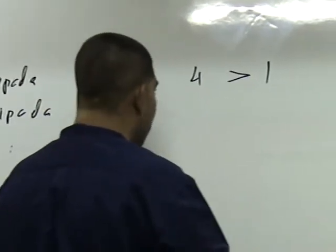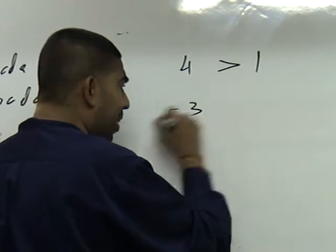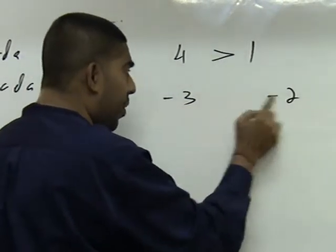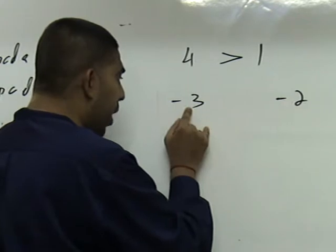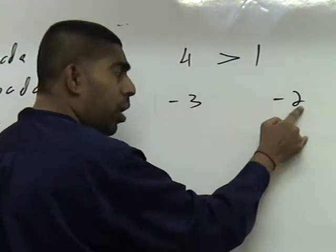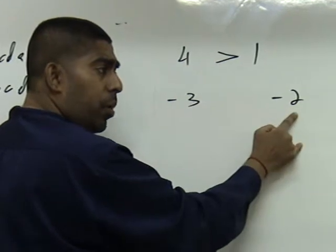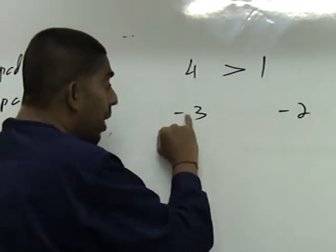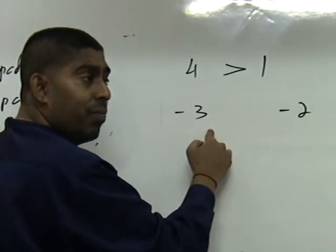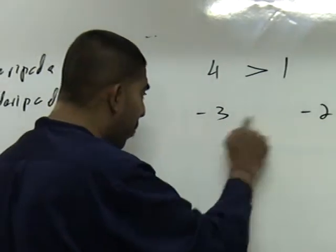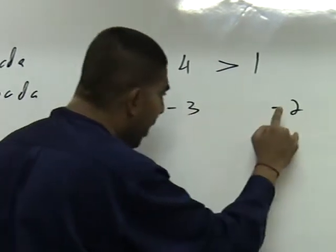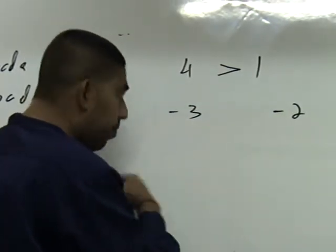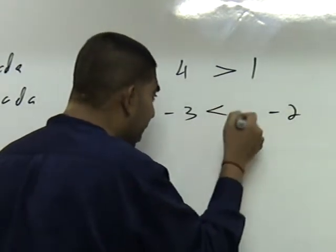Now, negative three and negative two. Is negative three greater than negative two or smaller? You tengok biasanya tiga dan dua, tiga lebih besar daripada dua. Tapi untuk negative, terpali. Kalau ada tanda negative, lebih besar number itu nilainya lebih kecil. For negative numbers, the bigger the number, the smaller the value. So negative three is less than negative two.